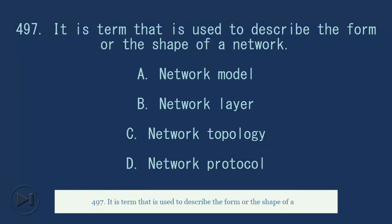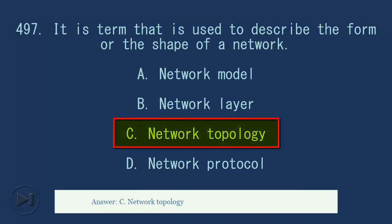497. It is term that is used to describe the form or the shape of a network. A. Network model. B. Network layer. C. Network topology. D. Network protocol. Answer, C. Network topology.